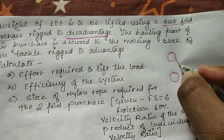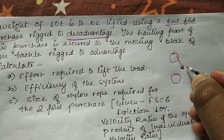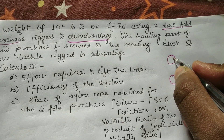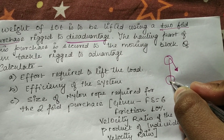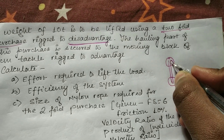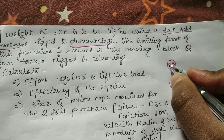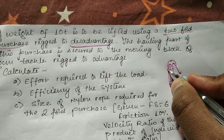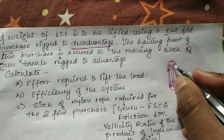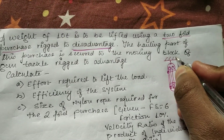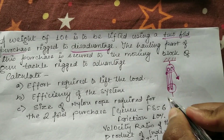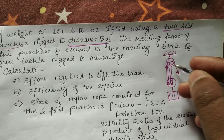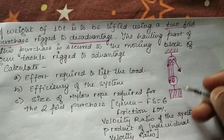Let's draw the figure. The effort is in this direction. A two-fold purchase consists of four sheaves, so the rope goes through sheave one, sheave two, sheave three, and sheave four, and finally the rope ends here. This is the diagram of the two-fold purchase and this is where the load is applied.